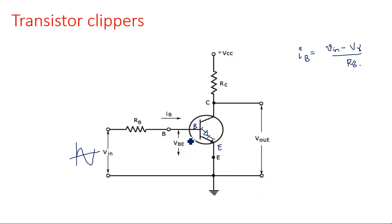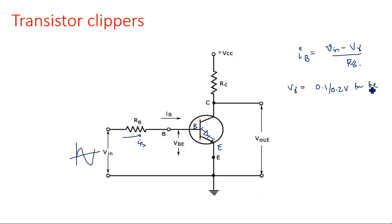V_gamma is 0.1 or 0.2 volts for germanium, and 0.6 or 0.7 volts for silicon — sometimes referenced as 0.3 volts. This is the required voltage to turn the transistor on.